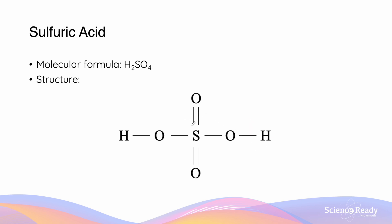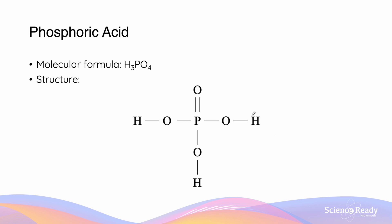If we look at sulfuric acid, however, we can see now that there are actually two hydrogens. These two hydrogens means that it is able to donate two of these hydrogens, and we call this a diprotic acid. For phosphoric acid, the structure demonstrates that now we have three hydrogens which are able to be donated, and so we call this a triprotic acid.